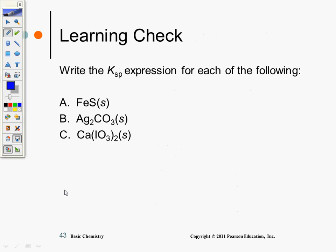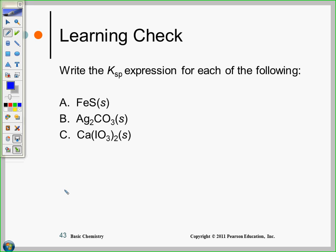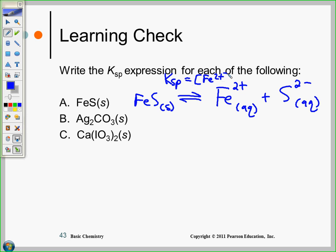So let's write this Ksp expression. I'm going to do this quickly because we're running out of time. FeS, a solid. What are my two ions? Fe what? What's the charge? Two plus. What's the charge on sulfide? Fe. Two minus. So that Ksp is going to be Ksp equals Fe 2+ times the concentration of S 2-.